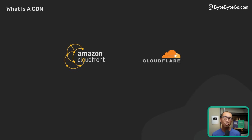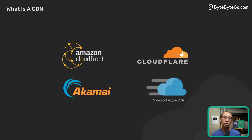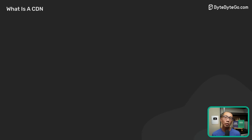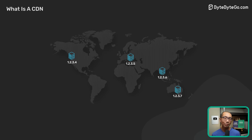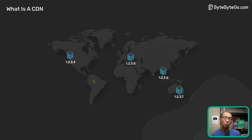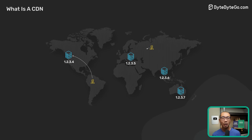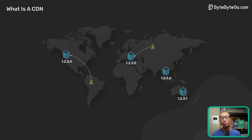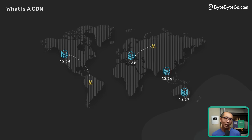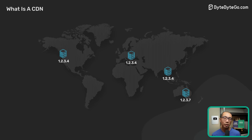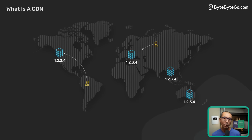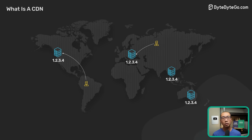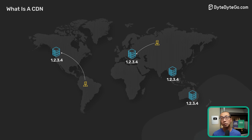Different CDNs use different technologies to direct a user's request to the closest POP. Two common ones are DNS-based routing and Anycast. With DNS-based routing, each POP has its own IP address. When a user looks up the IP address for the CDN, DNS returns the IP address of the POP closest to them. With Anycast, all POPs share the same IP address. When a request comes into the Anycast network for that IP address, the network sends the request to the POP that is closest to the requester.